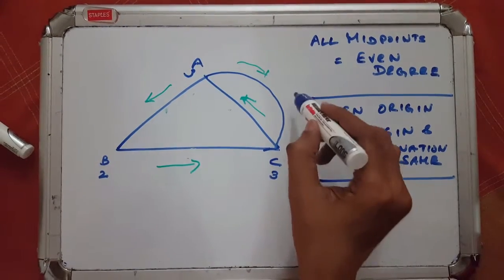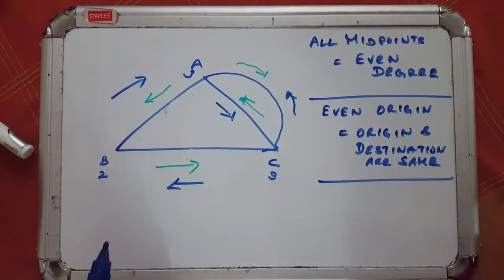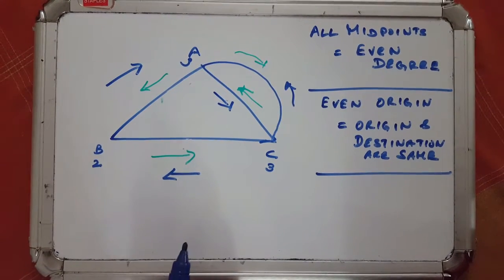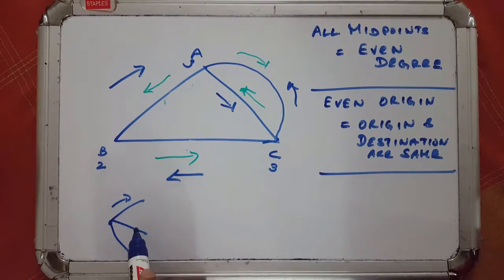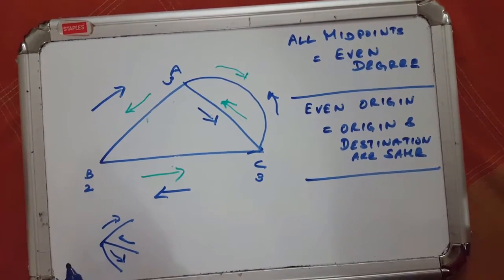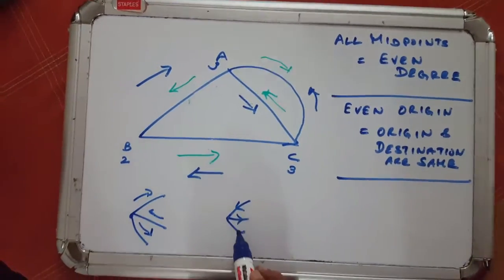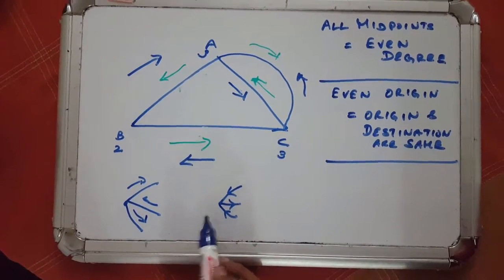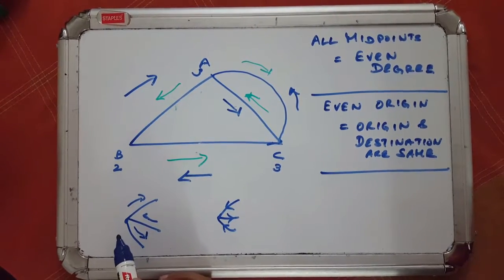If I start at C, I go to A, come back to C, move down from C to B, and go from B to A — I started at C and ended at A, both odd-degree vertices. Think about this: if you have an odd-degree vertex with three lines, you go out through one, come back through another, then go out through the third. So odd-degree vertices must be either the origin or the destination. They can't be both — that would require an even number — and they can't be midpoints, since all midpoints must have even degree.